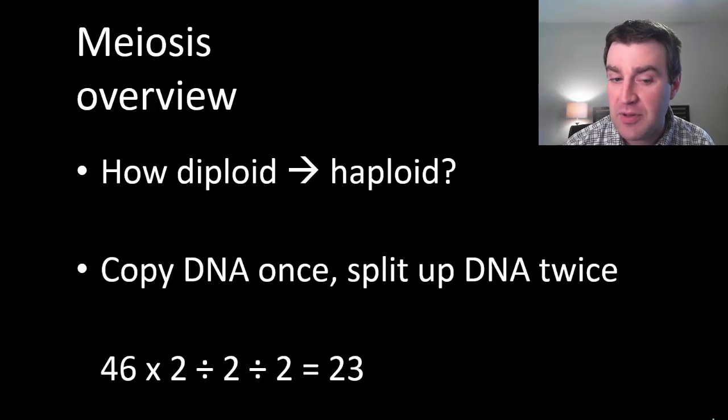So how do you go from diploid to haploid? Basically we're going to see that meiosis starts out like mitosis. You still copy all the DNA at the very beginning, but then you split up the DNA twice.